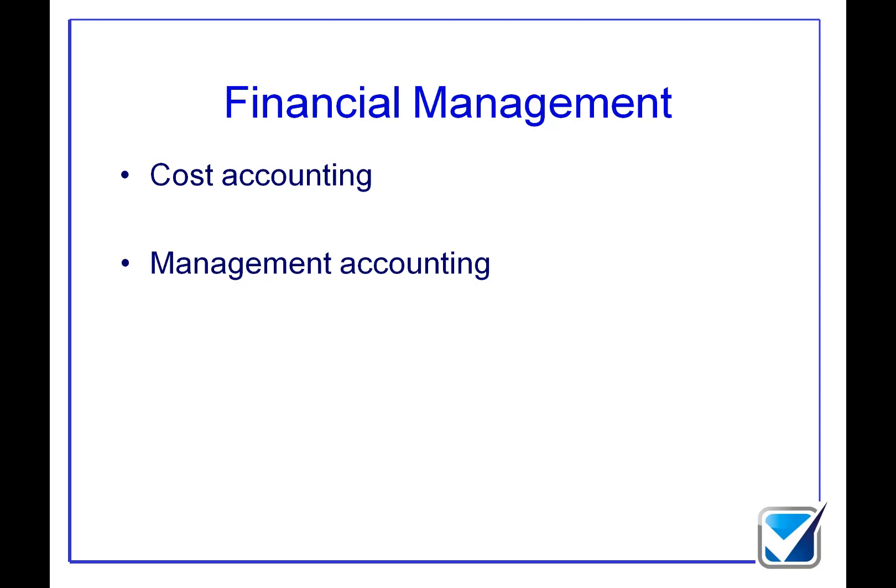Once a decision is made, it will have an effect — an increase in profits, losses, assets, or liabilities. That effect is measured by the financial accountant. So cost accountant collects data, management accountant converts it into information, gives it to the manager to make a decision, that decision has an effect, and the financial accountant measures it. The financial accountant's work is then reviewed by the auditor, which will be paper A&A.